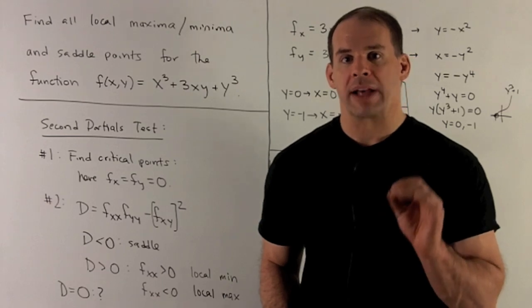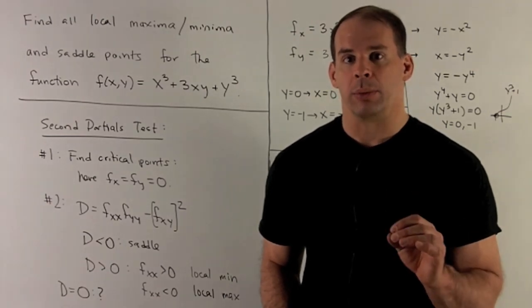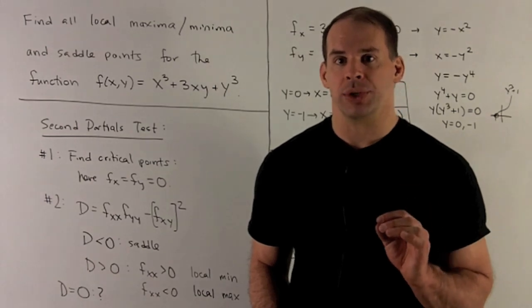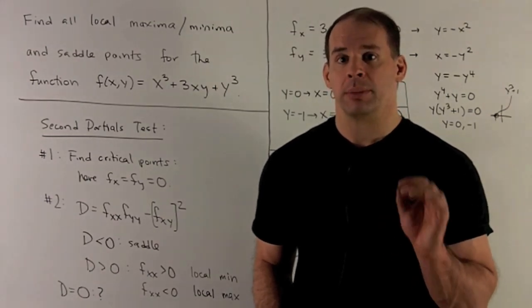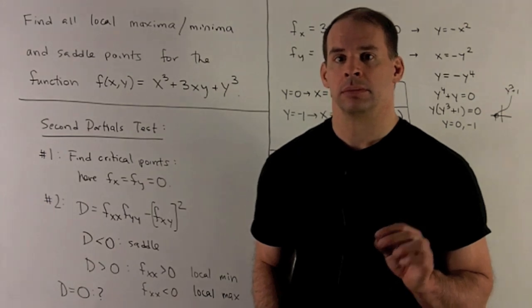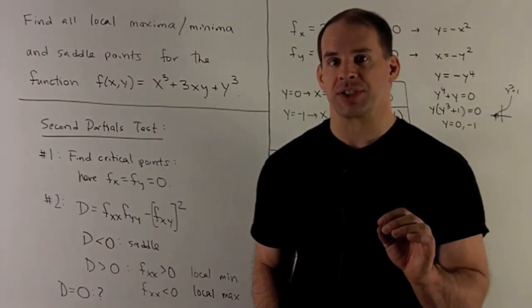Find all local maxima and minima and saddle points of the function f(x,y) equal to x cubed plus 3xy plus y cubed. We proceed by the second partials test.